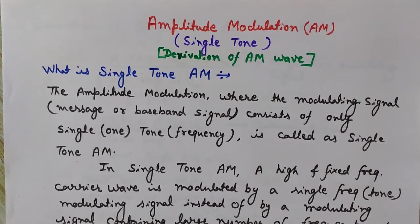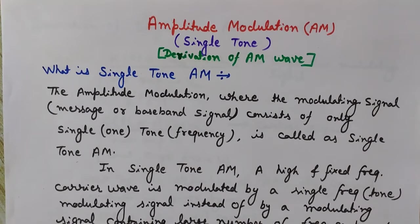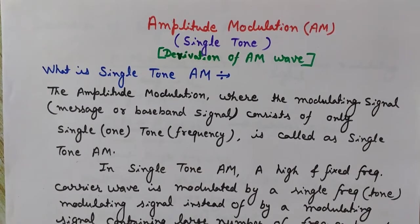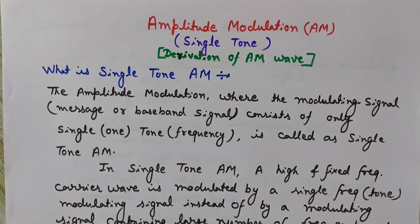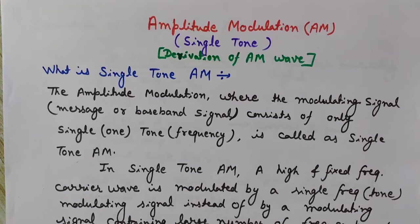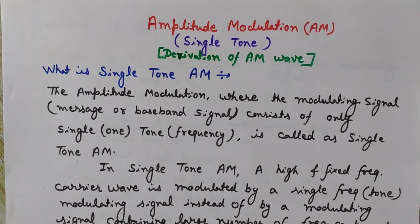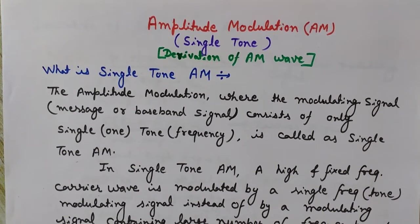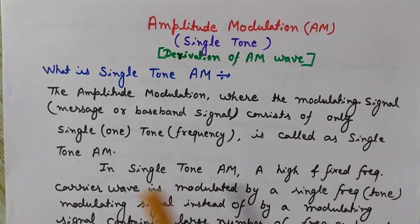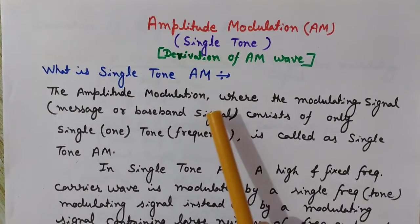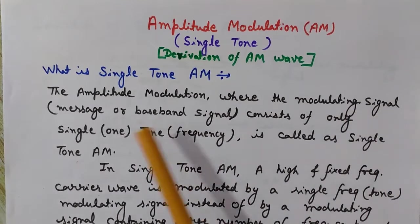Before deriving the equation of the AM wave for single tone, we need to understand what amplitude modulation is. Amplitude modulation is a technique of modulation where the amplitude of the carrier wave is modulated or varied according to the instantaneous value of the modulating signal. This modulating signal is also known as the message signal or baseband signal.